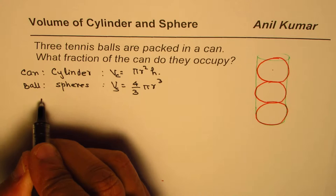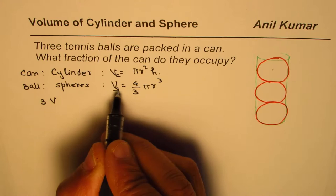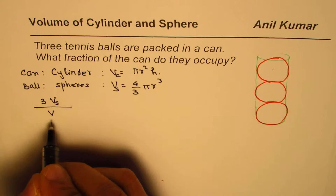We want to find fraction of can they occupy, means three balls. So three times volume of each ball, which is a sphere I wrote S here, divided by the volume of cylinder.